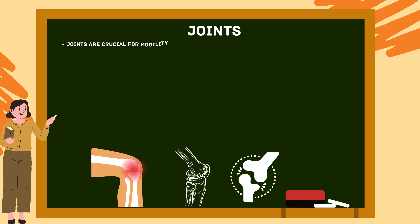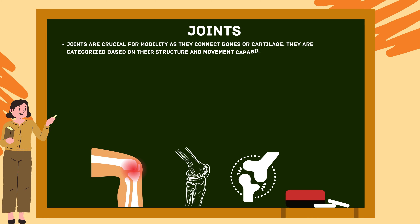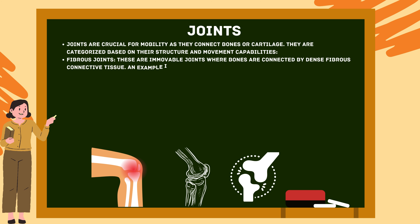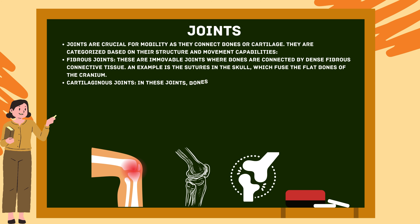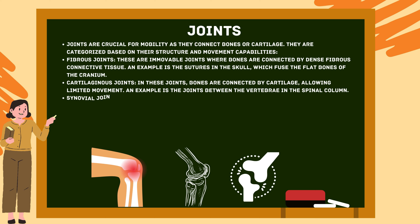Joints are crucial for mobility as they connect bones or cartilage, categorized based on structure and movement. Fibrous joints are immovable joints where bones are connected by dense fibrous connective tissue — for example, the sutures in the skull. Cartilaginous joints connect bones by cartilage, allowing limited movement — for example, the joints between vertebrae in the spinal column.